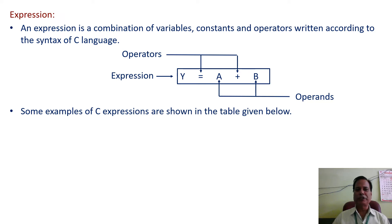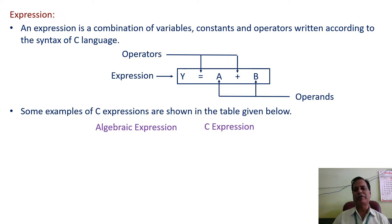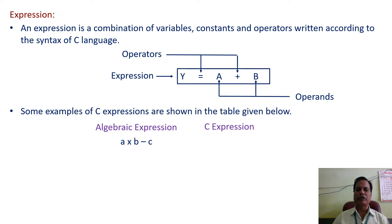Some examples of C expressions are shown in the table below. If we have an algebraic expression, we have to make some modifications when writing it as a C expression. For example, if we have a into b minus c as an algebraic expression, when writing it as a C expression, in place of the cross symbol we use the asterisk. So it becomes a * b - c.